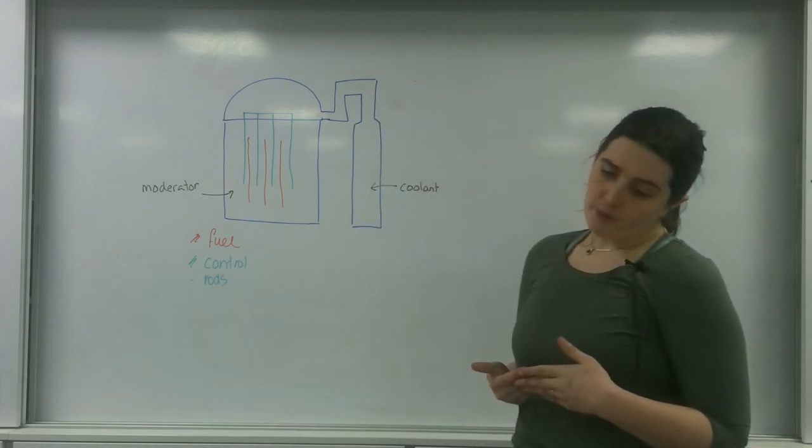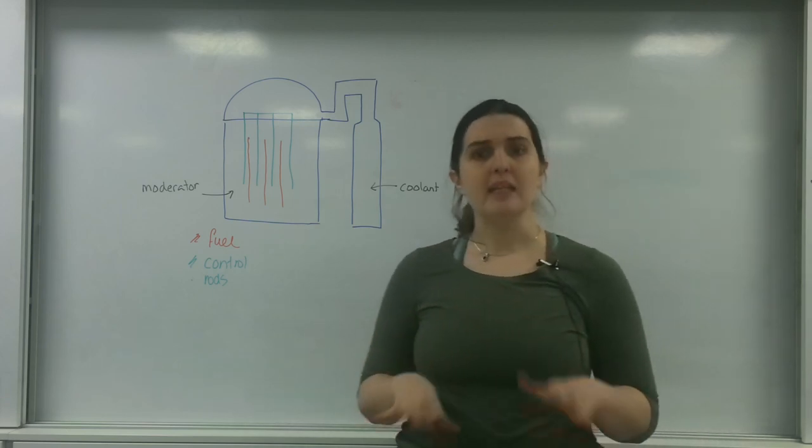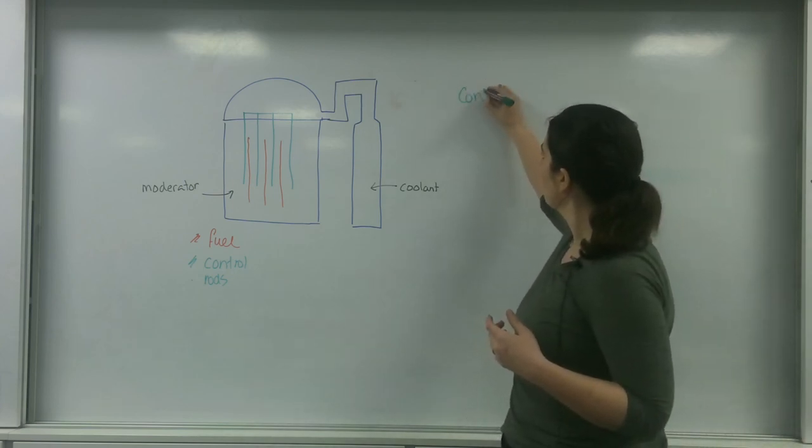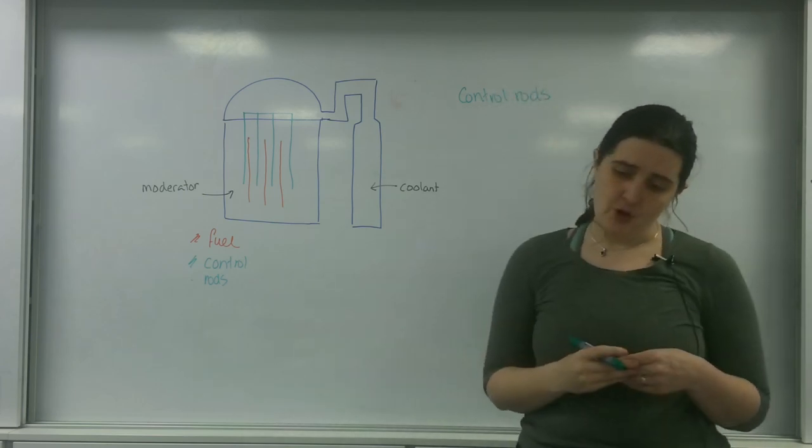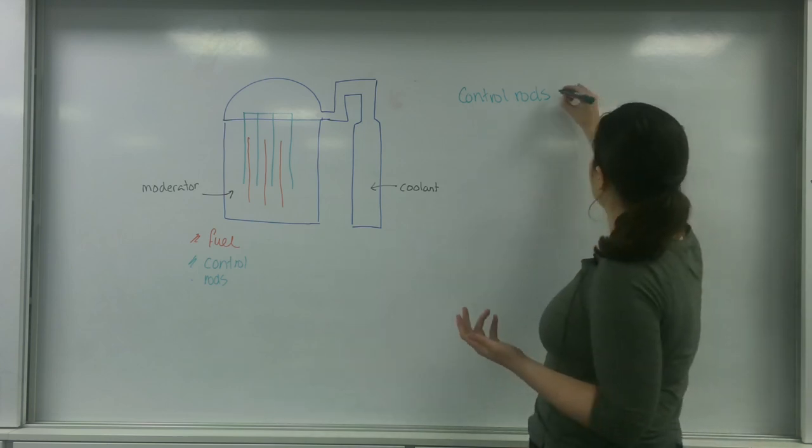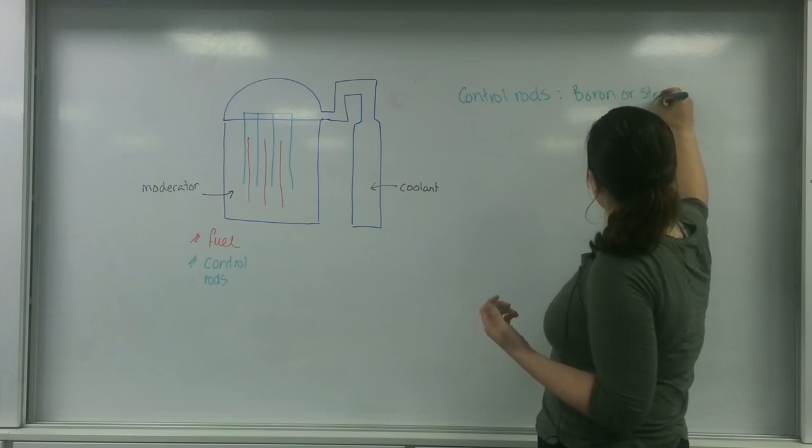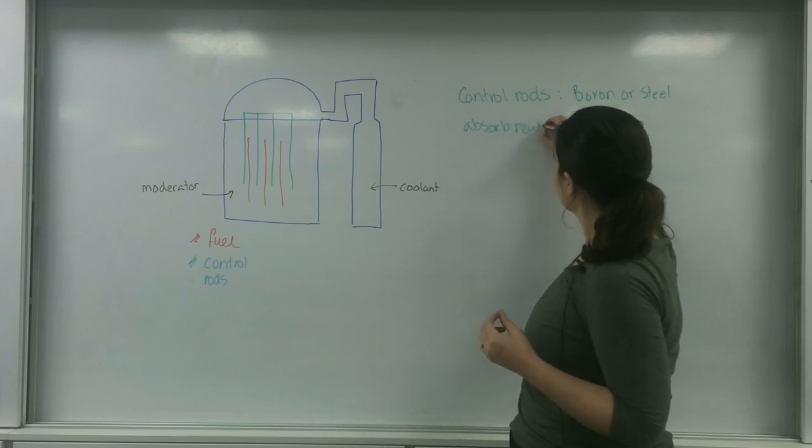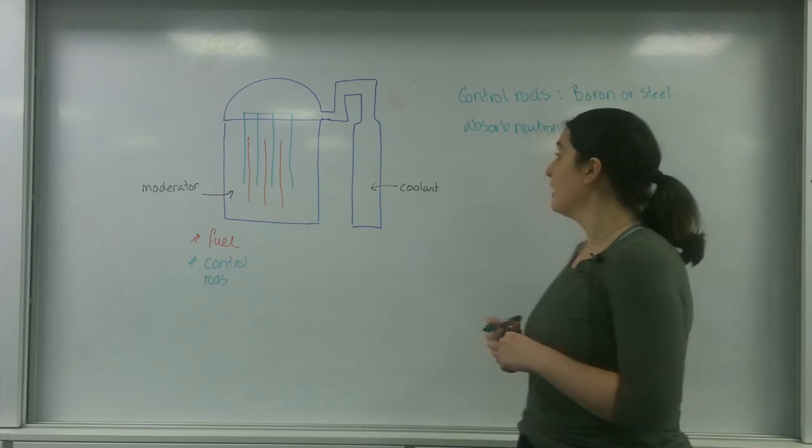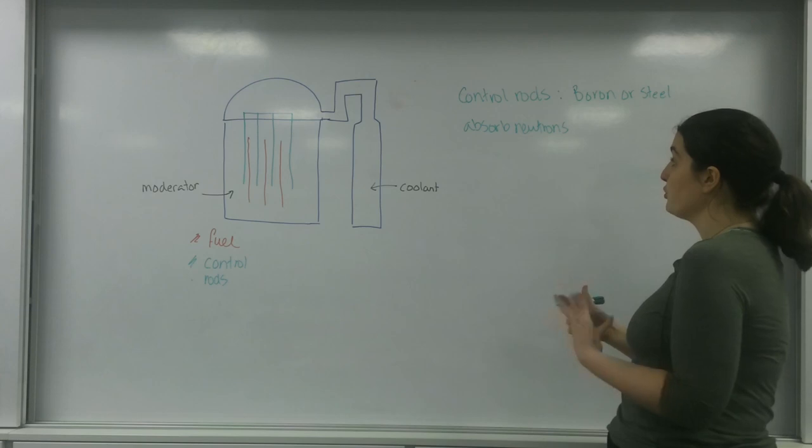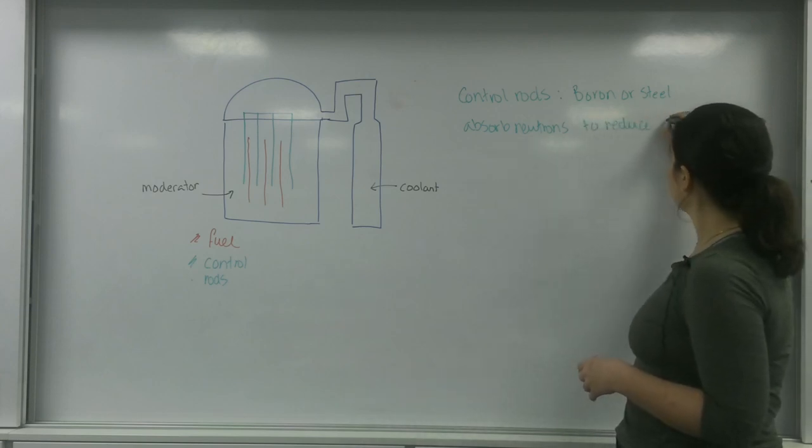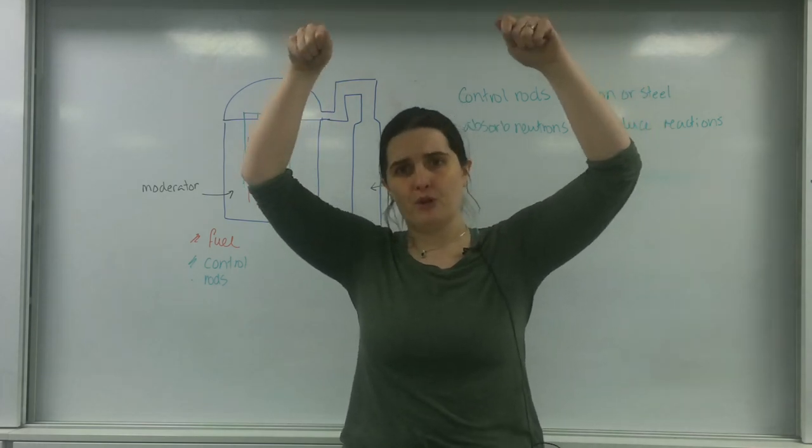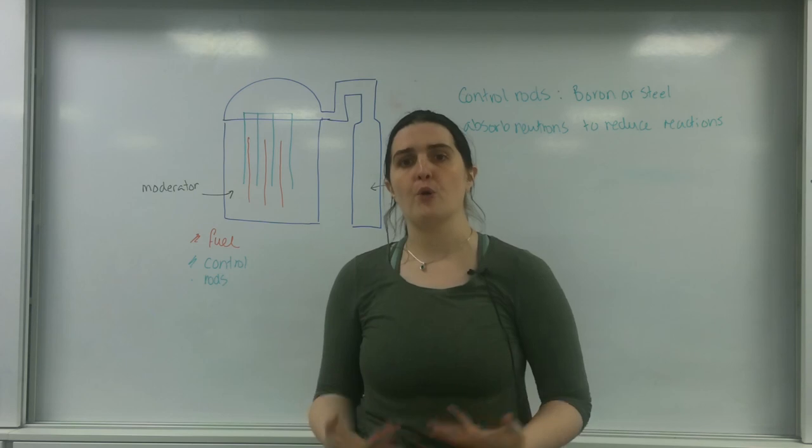I'm going to talk about each of the parts. The fuel is the obvious part of it here. What I'm going to talk about first of all is the idea of control rods. Control rods tend to be made from some sort of boron or steel, and the idea is that they absorb neutrons to basically reduce the chance of chain reaction. They absorb neutrons to reduce reactions. You can control this by having the control rods not in at all or in more and more, and as you put more in they will absorb more neutrons so you can slow the decay down.